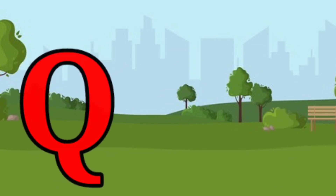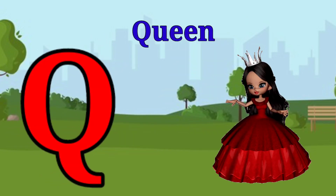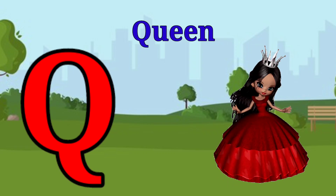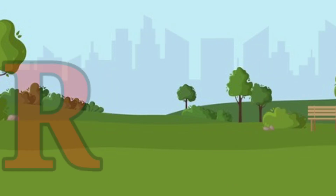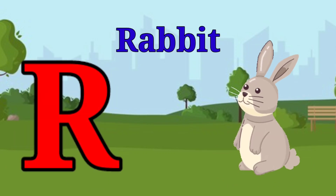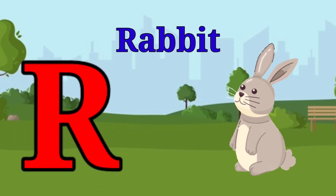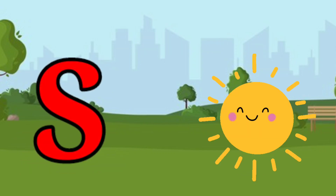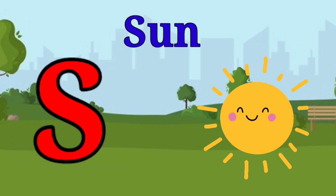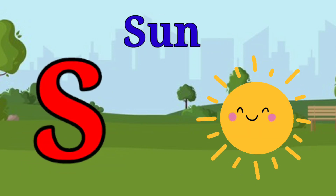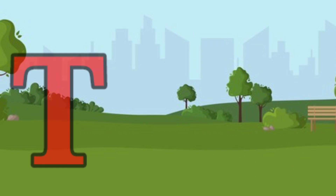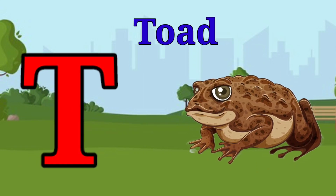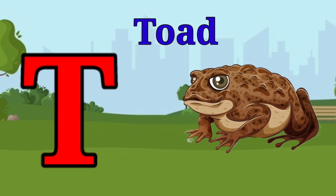Q is for queen, k-k-queen. R is for rabbit, r-r-rabbit. S is for sun, s-s-sun. T is for toad, t-t-t-toad.